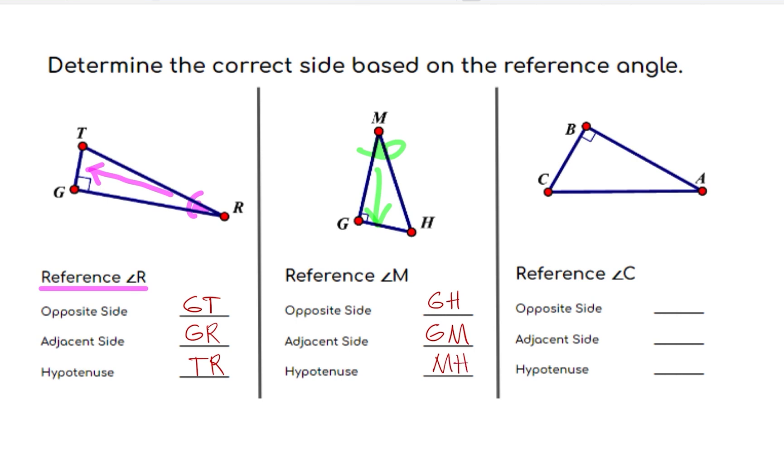The third example, we have angle C as reference. Angle C opposite side is segment AB or BA. Adjacent side is segment CB or BC. While hypotenuse is segment AC or CA.